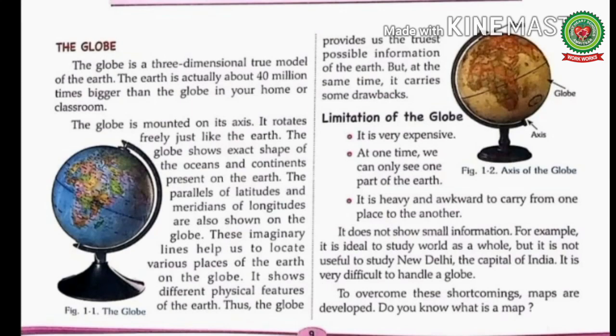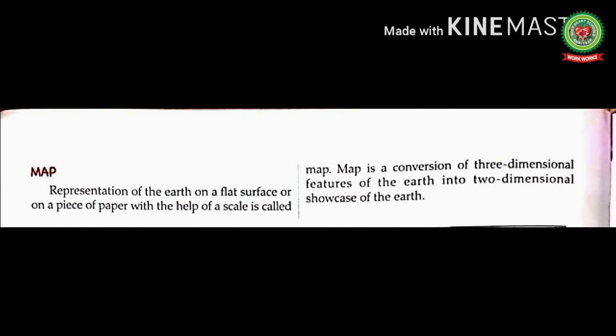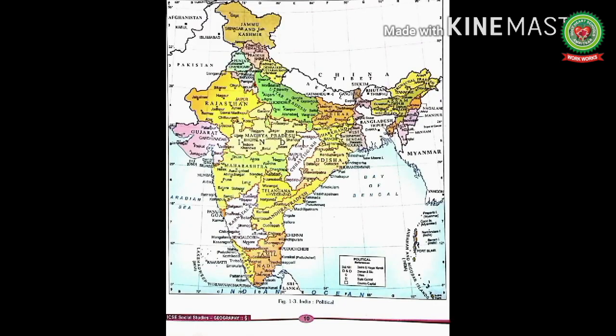Now students, come to page number 10: Map. What do you mean by map? Map means representation or drawing of the earth on a flat surface. Representation of the earth on a flat surface or on a piece of paper with the help of scale is called a map. Mark this definition. Map is the conversion of three-dimensional features of the earth into a two-dimensional showcase — two-dimensional means it consists of length and breadth. This is the example of a map drawn on a flat surface.